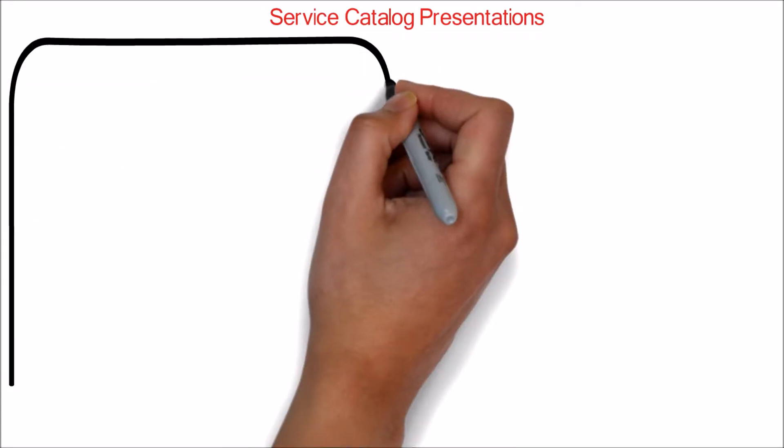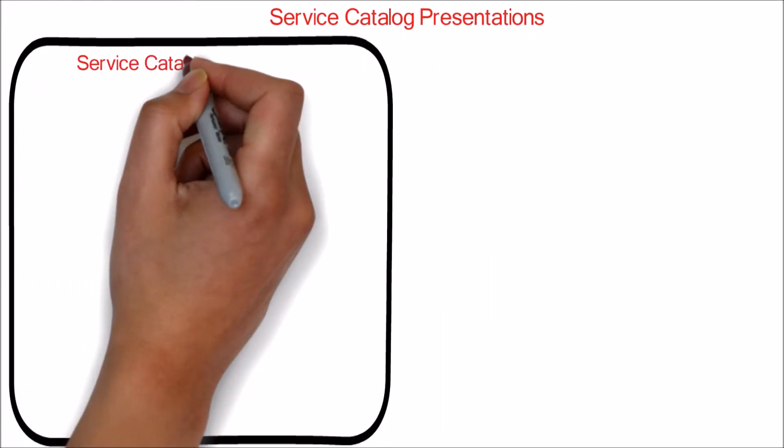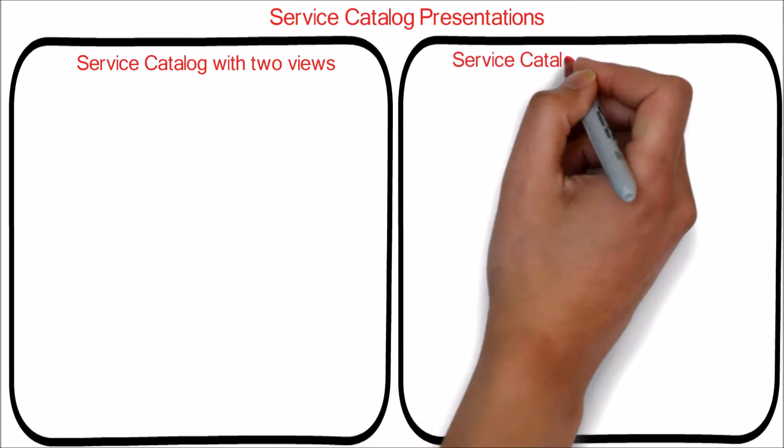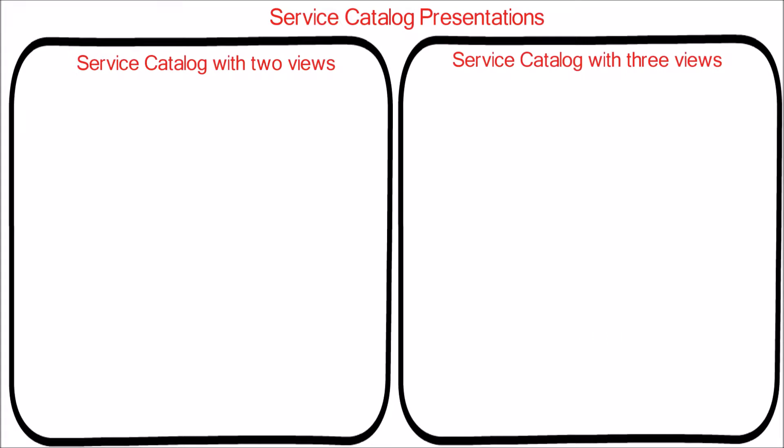This video explains about the Service Catalogue presentation types. There are two types of Service Catalogue presentations: Service Catalogue with two views and Service Catalogue with three views. First, we will look into the two-view catalog.